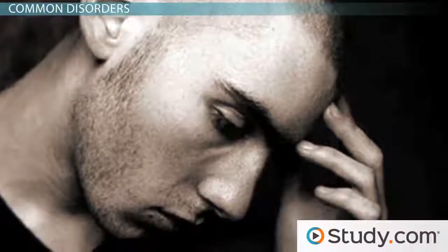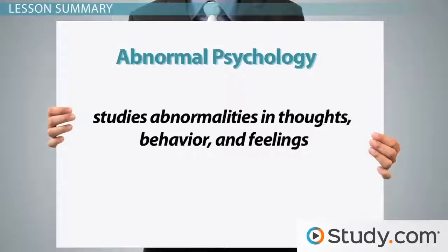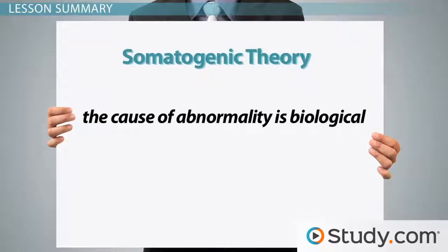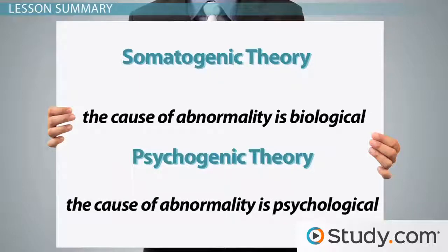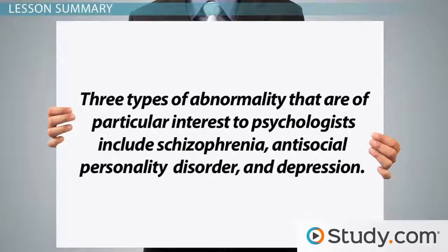Abnormal psychology studies abnormalities in thoughts, behavior, and feelings. Psychologists usually view abnormality in terms of somatogenic theory, which says that the cause of abnormality is biological, and psychogenic theory, which says that the cause of abnormality is psychological. Three types of abnormality that are of particular interest to psychologists are schizophrenia, antisocial personality disorder, and depression.